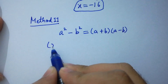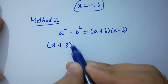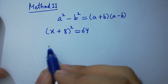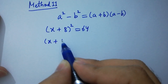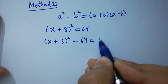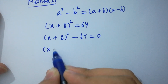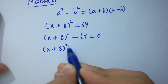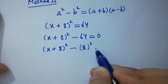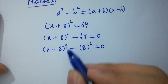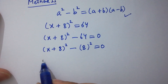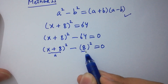(x + 8) whole square equals 64, which can be rewritten as (x + 8) whole square minus 64 equals 0. Here 64 equals 8 square, so this is like a square minus b square. Applying this formula, where (x + 8) is a and 8 is b.